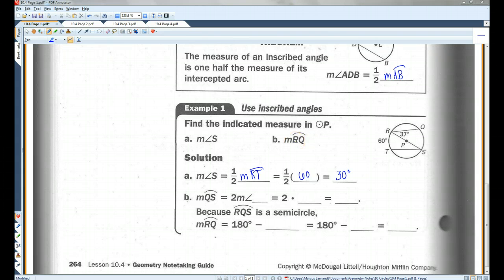The measure of arc RQ, that's this arc here. In order to find this arc, what we need to do, we know that this is a semicircle, which means this whole thing is 180 degrees. If we can find this arc, we can subtract it to find RQ. So QS is going to be twice the measure of angle R. And the measure of angle R is 37 degrees. So 2 times 37, that's going to be 74. And this is going to be 180 minus 74 degrees. So this is 74 degrees. The whole thing is 180.